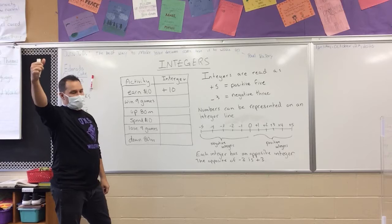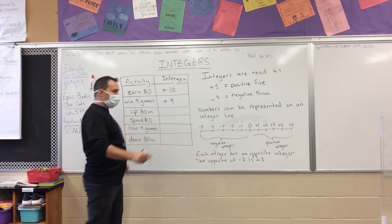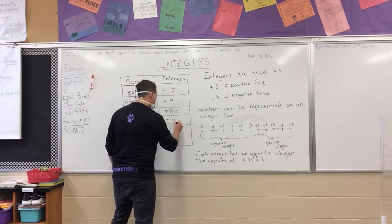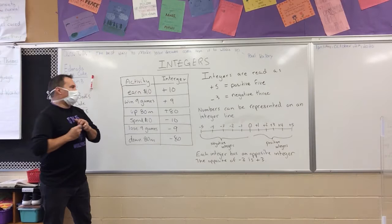Your team wins nine games — is it a positive or a negative? If you're going to win, positive, so it's positive nine. You go up 80 meters — positive 80. You spend ten dollars, Georgia — negative ten. You lose nine games — negative nine. You go down 80 meters — negative 80. So we can get all kinds of scenarios and represent those with integers.